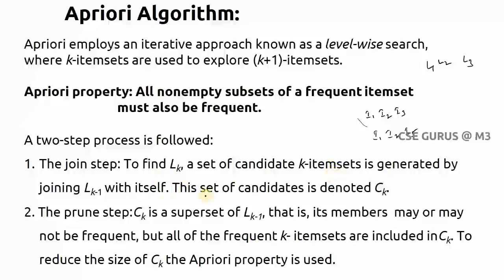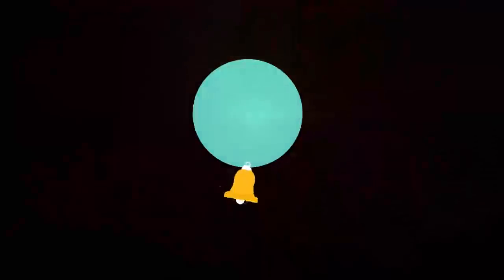The join step means that L suffix k sets are joined to generate candidates — for example, L1 sets joined to get C2, L3 sets joined to get C4. The prune step means C suffix k is a superset of L suffix k; its members may or may not be frequent, but all frequent k item sets are included. To reduce the size of C suffix k, we apply the Apriori property. This is the Apriori algorithm, which gives the output of all frequent item sets from a database.